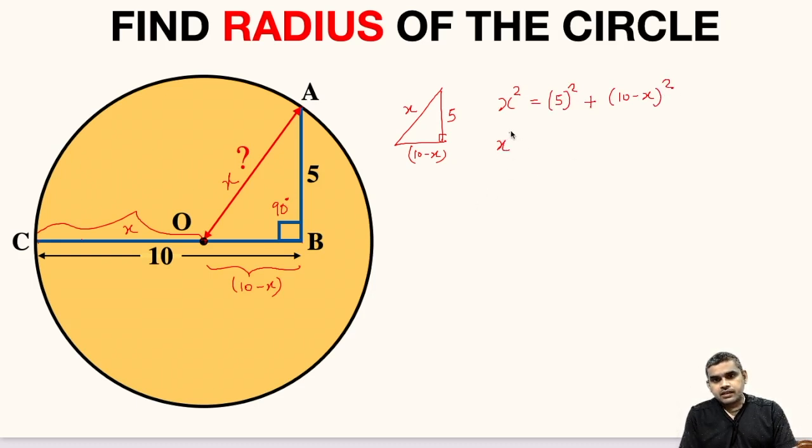Now let us simplify this, so this will be 25 plus, we need to expand this bracket. We know the formula A minus B whole squared equals A squared plus B squared minus 2AB. So on expanding this, we will get 10 squared plus X squared minus 20X.